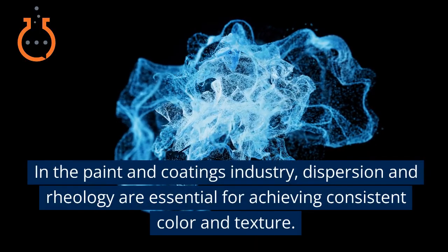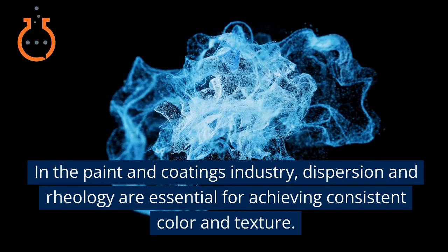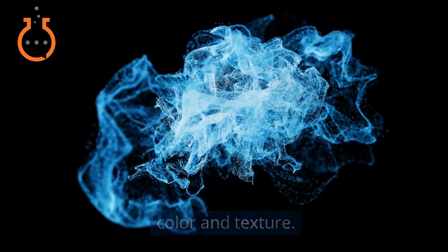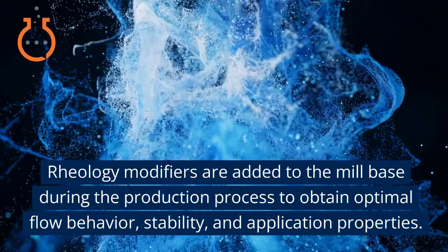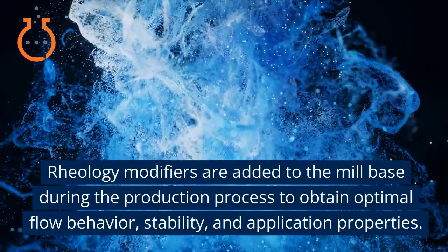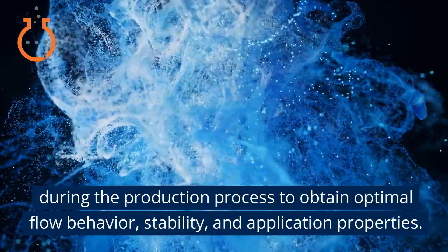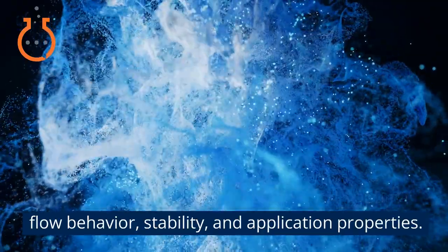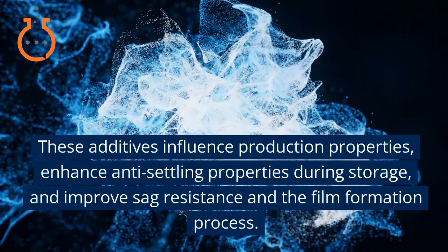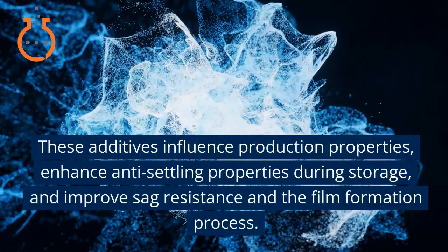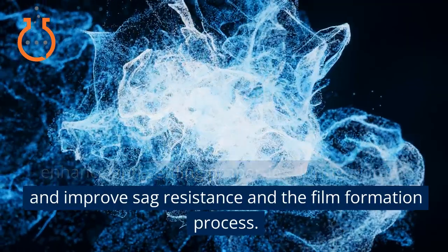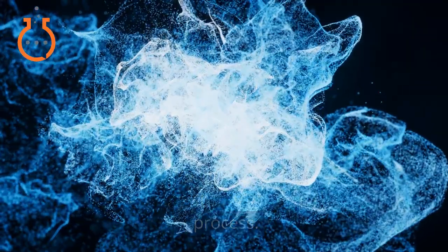In the paint and coatings industry, dispersion and rheology are essential for achieving consistent color and texture. Rheology modifiers are added to the mill base during the production process to obtain optimal flow behavior, stability, and application properties. These additives influence production properties, enhance anti-settling properties during storage, and improve sag resistance and the film formation process.